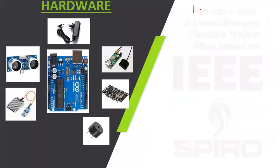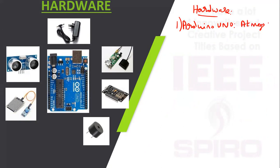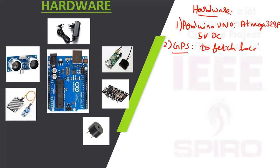For the hardware explanation, the first component is the Arduino Uno controller with IC name Atmega 328P, operating at 5V DC. The second component is GPS, used to fetch and update the flood location.